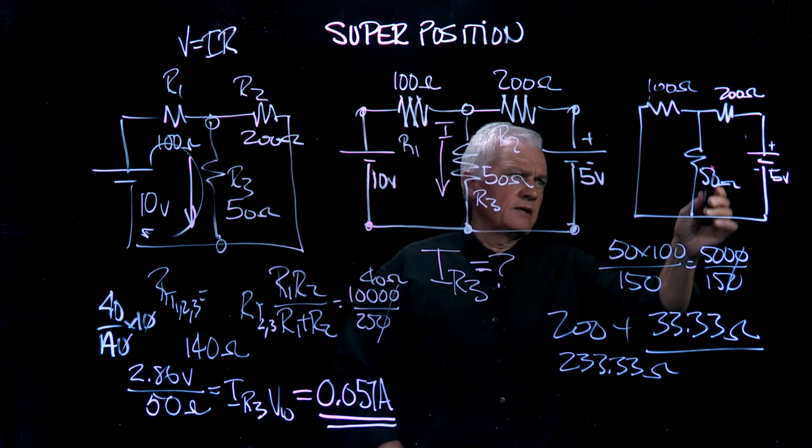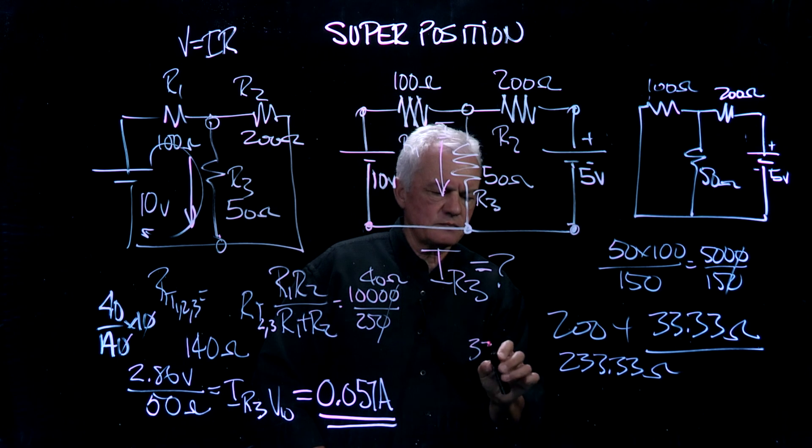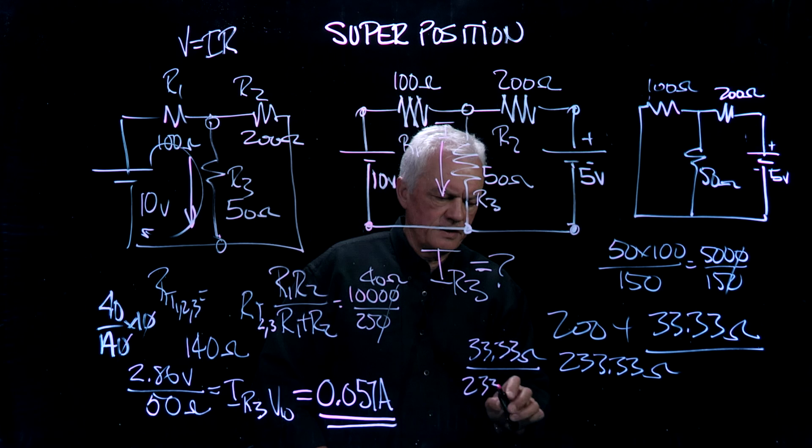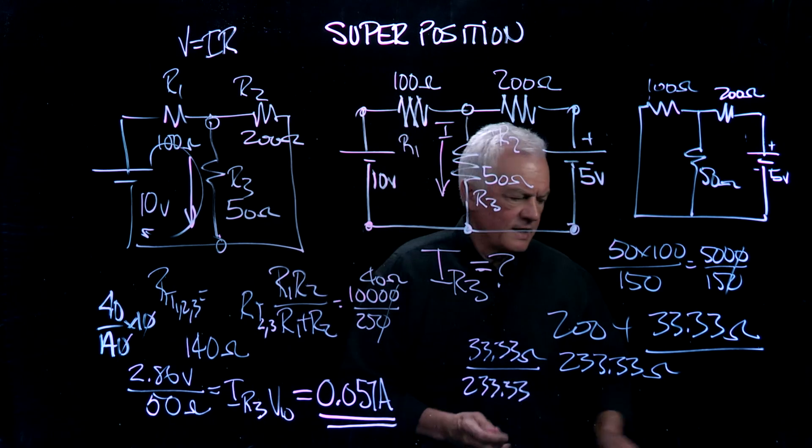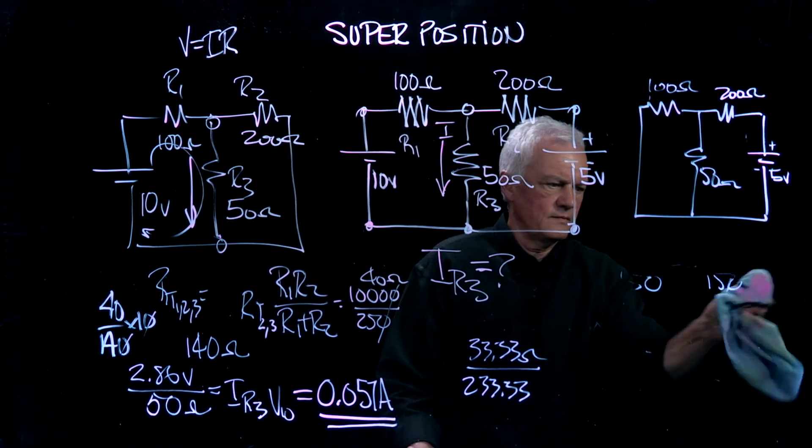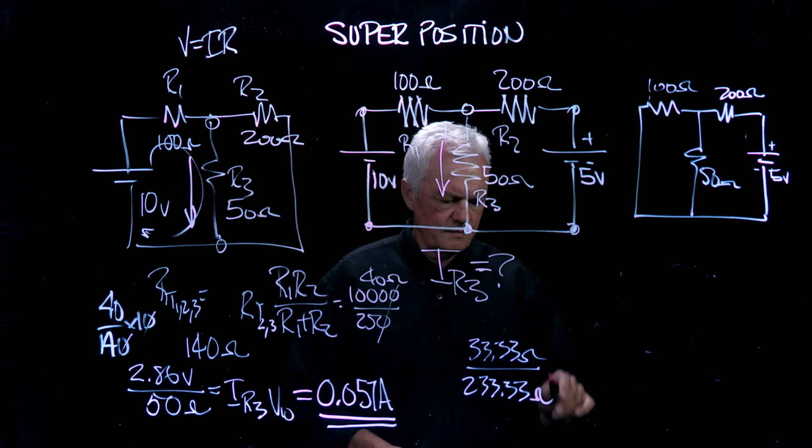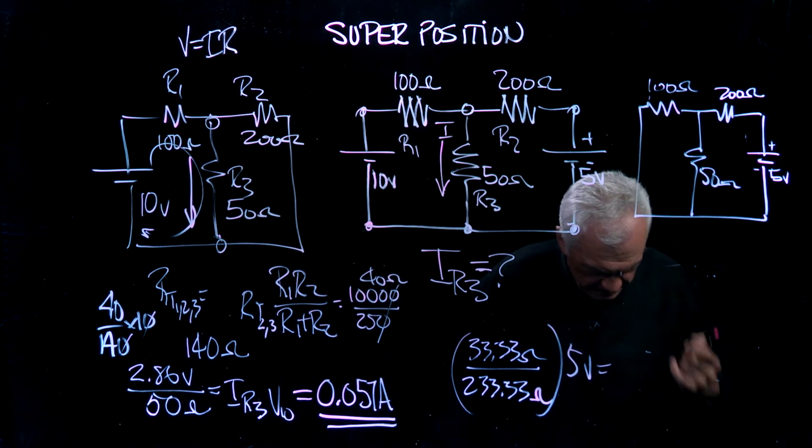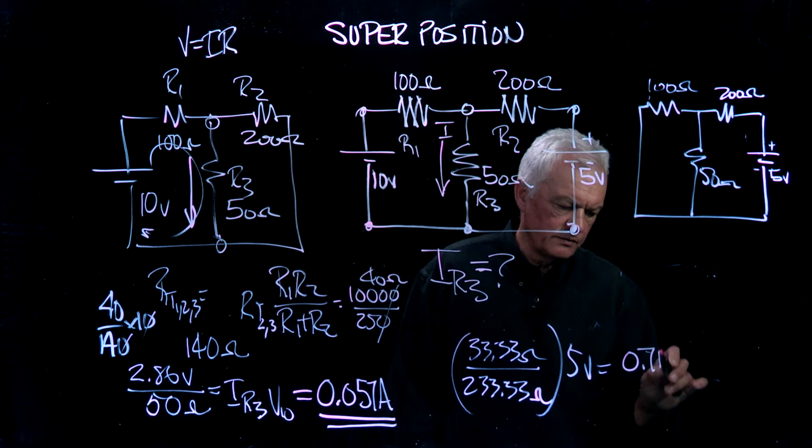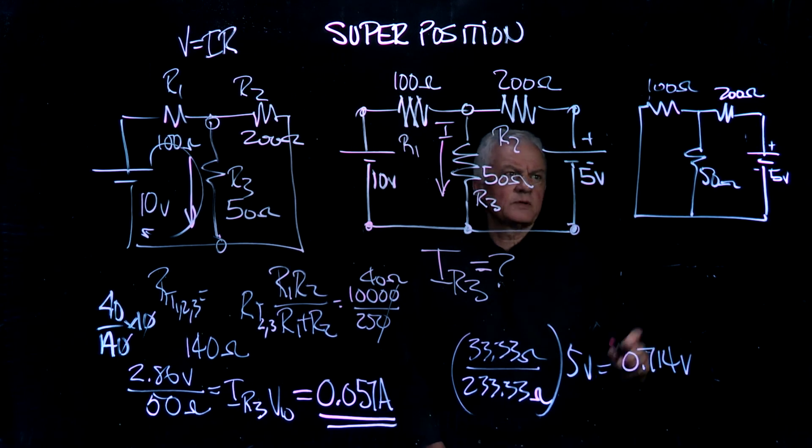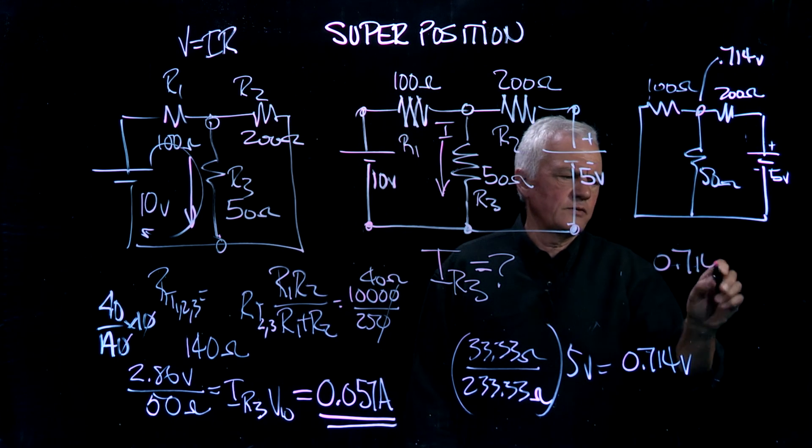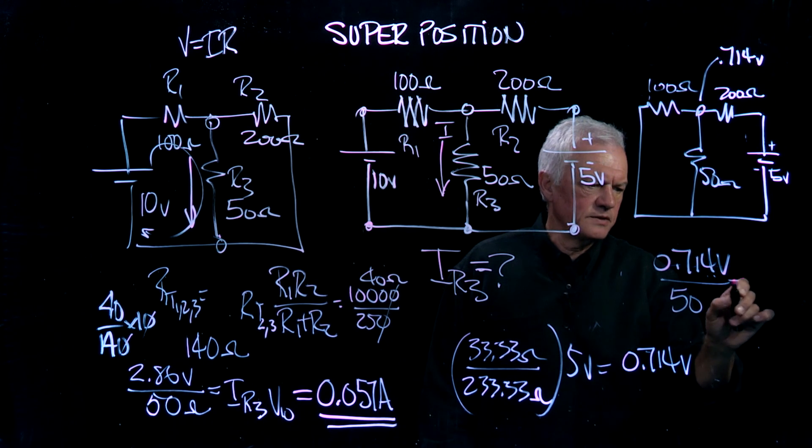We had 33.3 ohms and we divided it by the total, which is 233.33. And if we multiply that by 5 volts, we'll get basically 0.714 volts. 0.714 volts is sitting here, and if we divide 0.714 volts by 50, we're going to see what the current contribution is from that, and it's going to be on the order of 0.0143 amps.